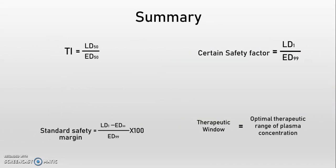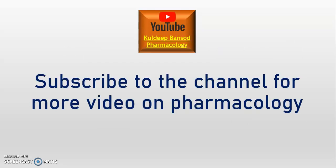To summarize: the therapeutic index is the ratio of LD50 to ED50, but relative safety can be better calculated using the certain safety factor. The standard safety margin tells us what percentage dose increase will produce a toxic effect. The therapeutic window gives a clear idea of the optimal plasma concentration of a drug. This concludes the evaluation of drug safety. If you liked this video, please subscribe to the channel to watch more videos on pharmacology. Till then, happy learning.